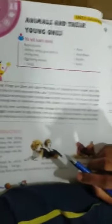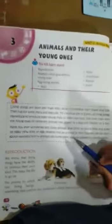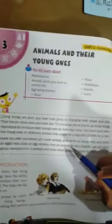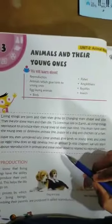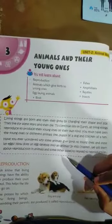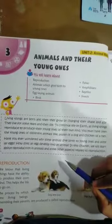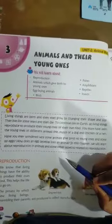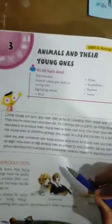You know, animals and their young ones means that is called reproduction. Living things are born and they grow by changing their shape and size. They live for some years and then die.